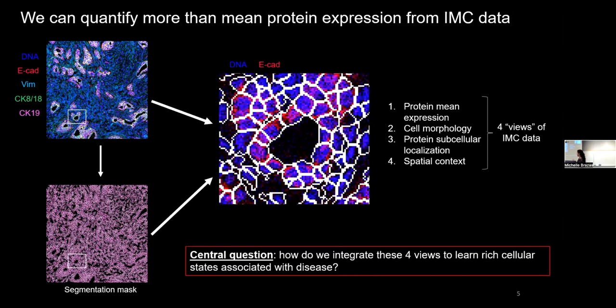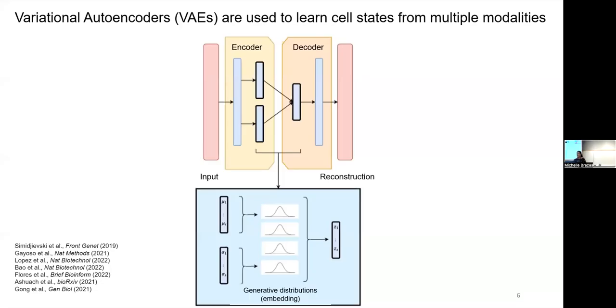One potential answer is that if we treat each of these views as a different mode of data, this becomes a multimodal data integration problem. And VAEs, or variational autoencoders, have been used a lot for this purpose. So a very general architecture of VAEs is they consist of two neural networks, an encoder and a decoder. The encoder is the one that takes in your high dimensional input and then learns a lower dimensional latent space representation, which then the decoder samples from and tries to reconstruct the data.